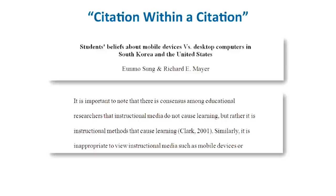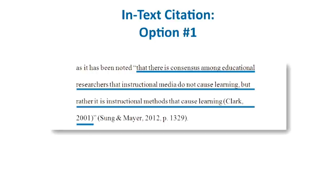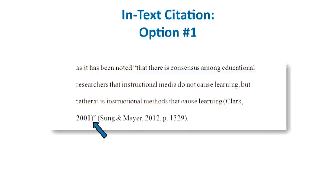You basically have two options. You can simply include any citations that appear in the original source when you reproduce the quotation in your paper. Notice that in parentheses Clark 2001 appears inside the quotation marks, because it is part of the original quotation written by Sung and Meyer. Then, in your in-text citation in parentheses, you cite Sung and Meyer, because that's the article you read.